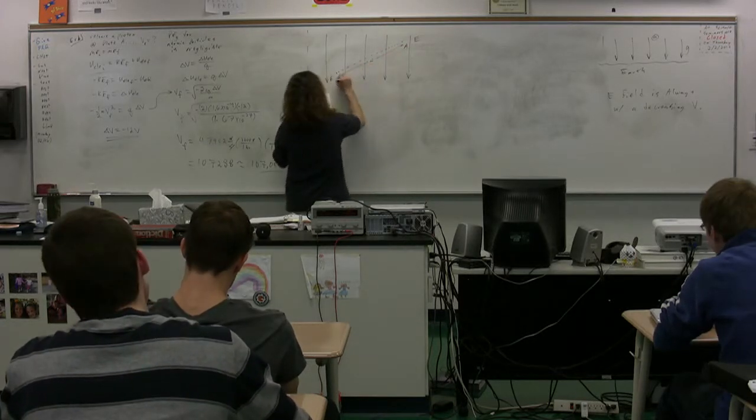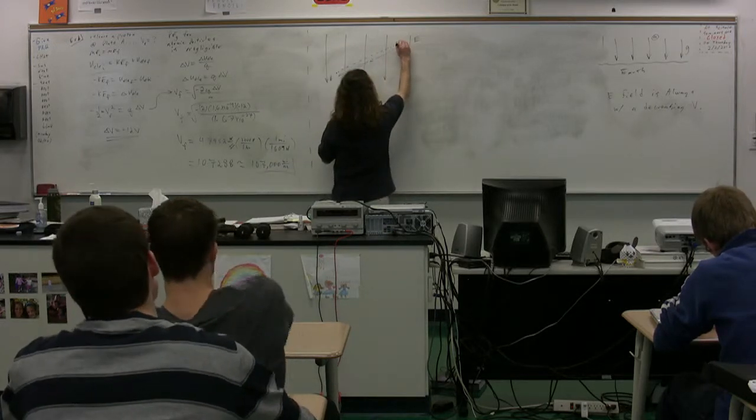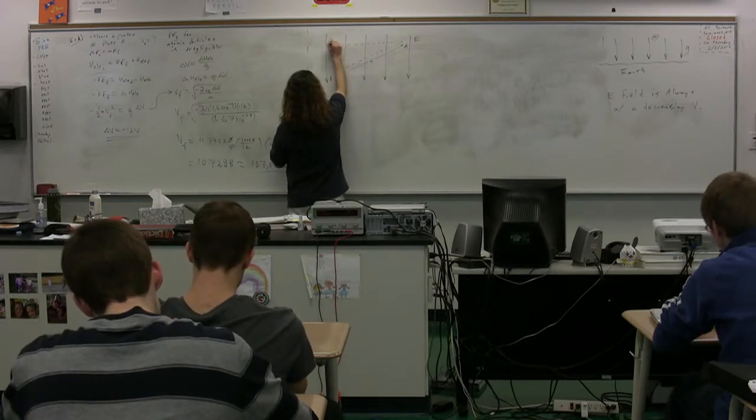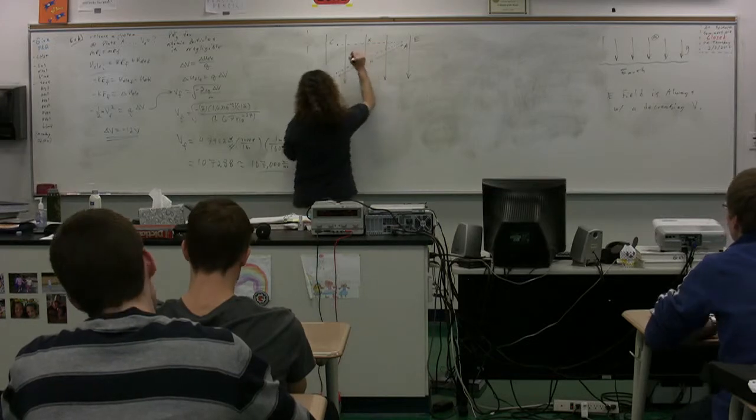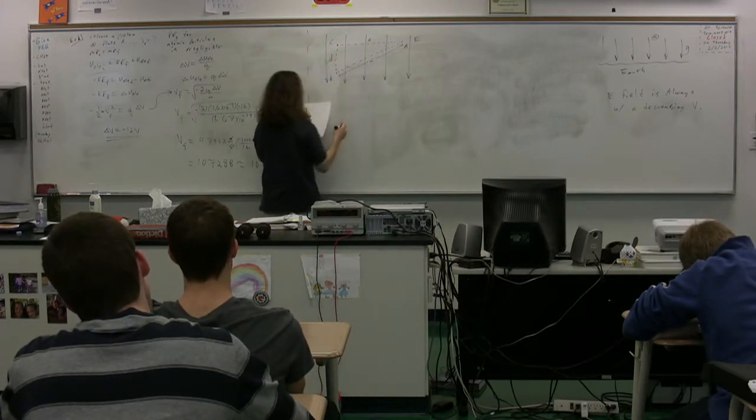The distance from A to B is S. We're going to define a further point C, which is right here. The distance from A to C, I'm going to label as X. The distance between C and B, I'm going to label as D.